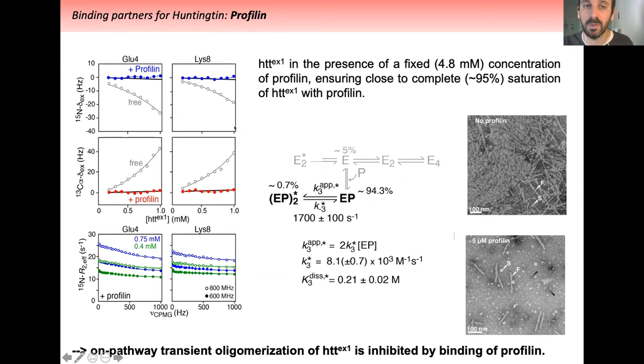Once we knew the values for affinity, we saturated huntingtin with profilin, adding around five millimolar profilin. We repeated all the measurements I showed for free exon 1. Interestingly, we didn't see any concentration-dependent chemical shift on nitrogen or C-alpha, meaning the EP complex cannot proceed any farther in the on-pathway dimerization process. It could still proceed along the off-pathway process, clearly seen from CPMG relaxation dispersion. This is in line with what Wright Pappu said in an amazing Nature paper a couple years ago showing profilin can prevent aggregation of exon 1.